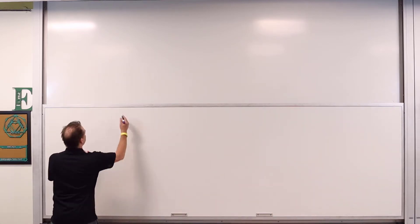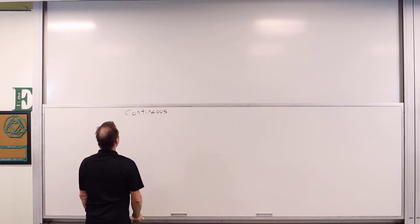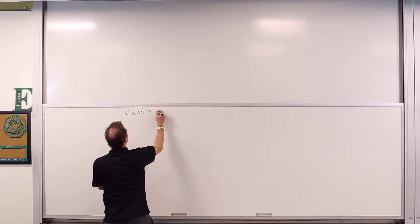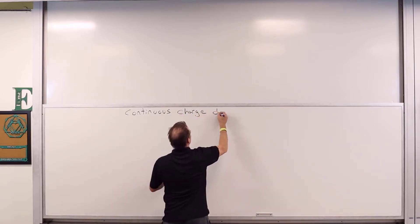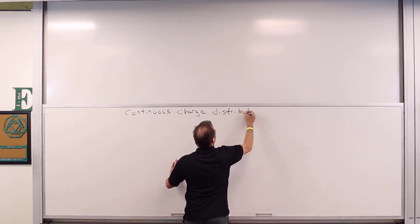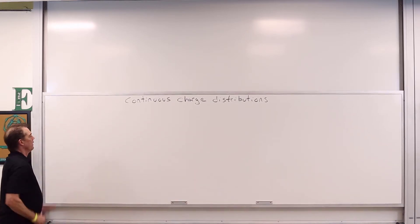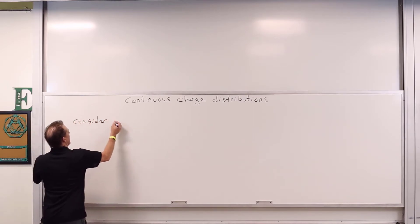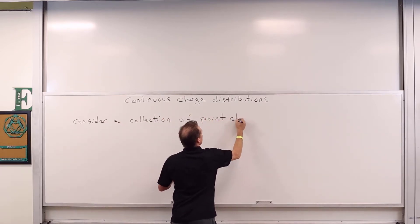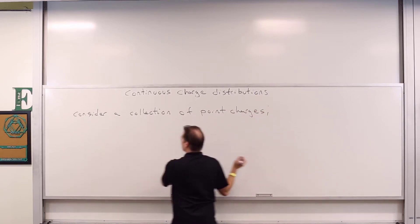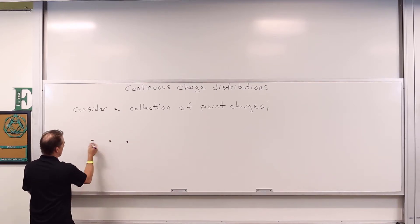So this is what we've got: continuous charge distributions. Consider a collection of point charges. We can take, say, three point charges: Q1, Q2, Q3.